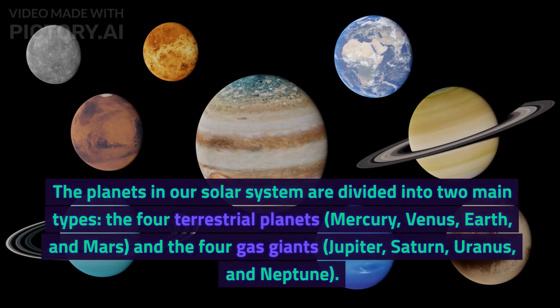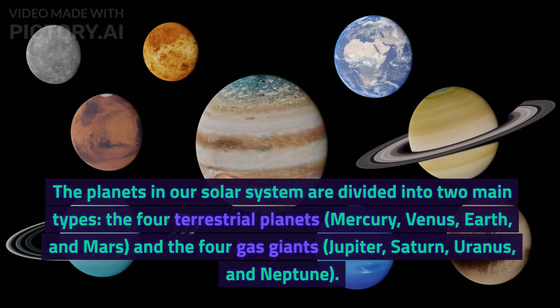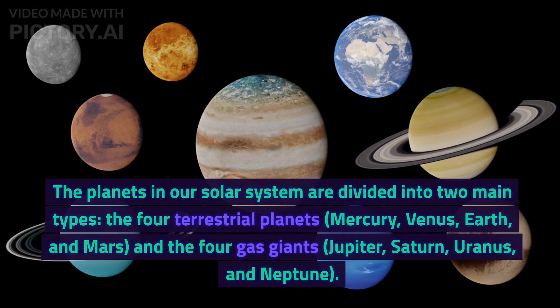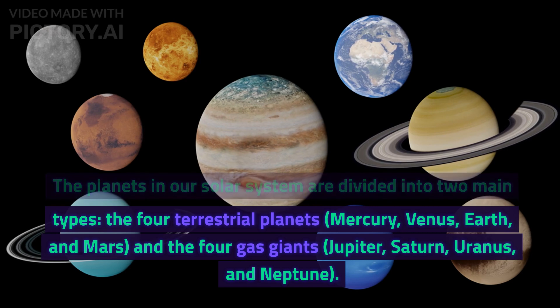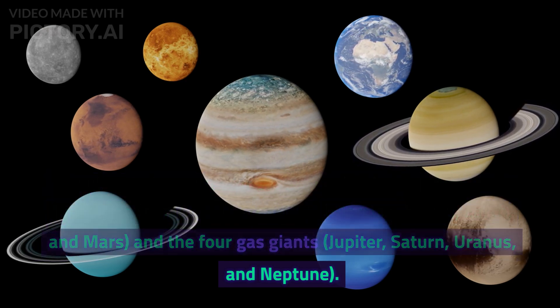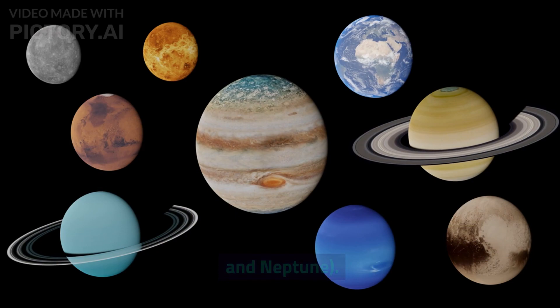The planets in our solar system are divided into two main types: the four terrestrial planets, Mercury, Venus, Earth, and Mars, and the four gas giants, Jupiter, Saturn, Uranus, and Neptune.